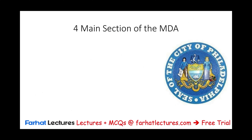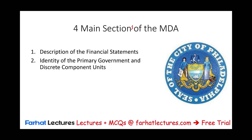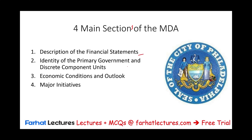The MD&A is composed of four main sections. First is a description of the financial statements. Second, identify the primary government and discrete component. Third is economic conditions and outlook. And fourth is major initiatives for the future. The best thing to do is take a look at an actual MD&A and keep those four sections in mind — it's better to look at a report rather than just talking about those units.